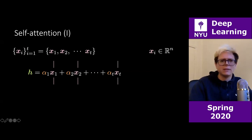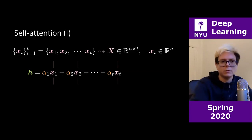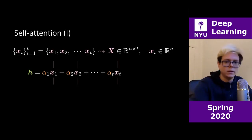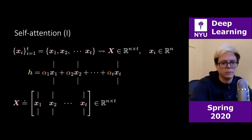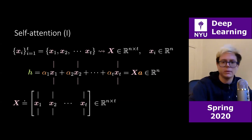As we saw in an earlier class, a quick notation for writing a linear combination of vectors is simply matrix multiplication. This set of x's — t vectors of dimension n — can be thought of as a matrix capital X with n rows and t columns, i.e., the horizontal stack of these vectors. The hidden representation h can then be written as X times the vector of alphas, which I'm calling bold a.